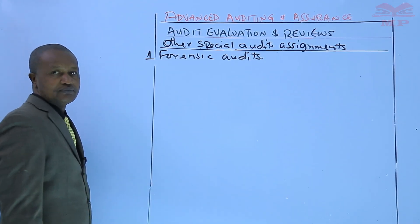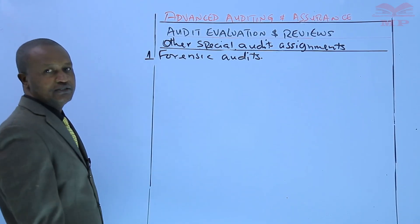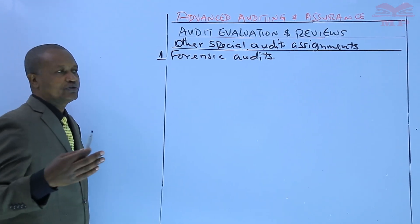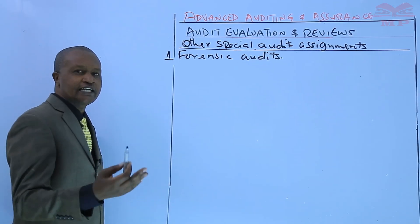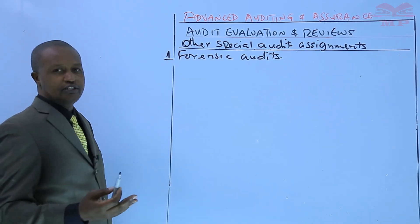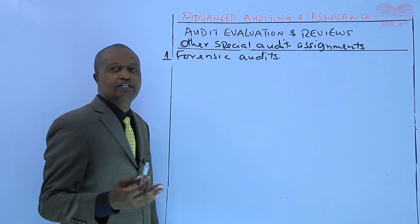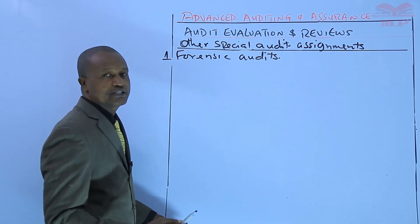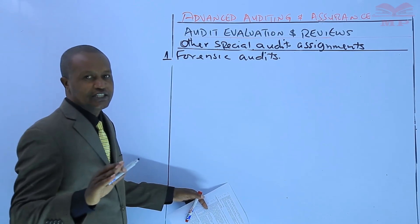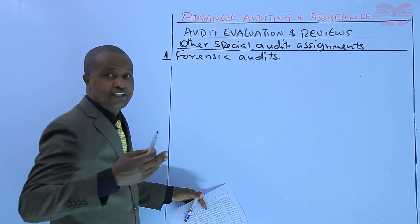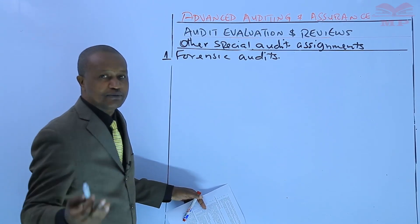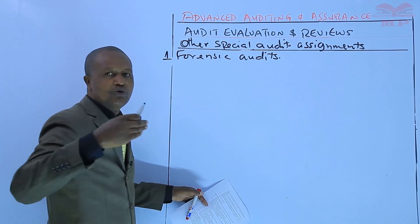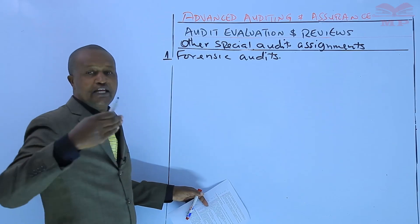Forensic audits focus on investigating and uncovering potential fraud, misconduct, or irregularities within an organization. Forensic auditors use specialized techniques to collect and analyze evidence, interview relevant parties, and provide expert opinions in legal proceedings if necessary.